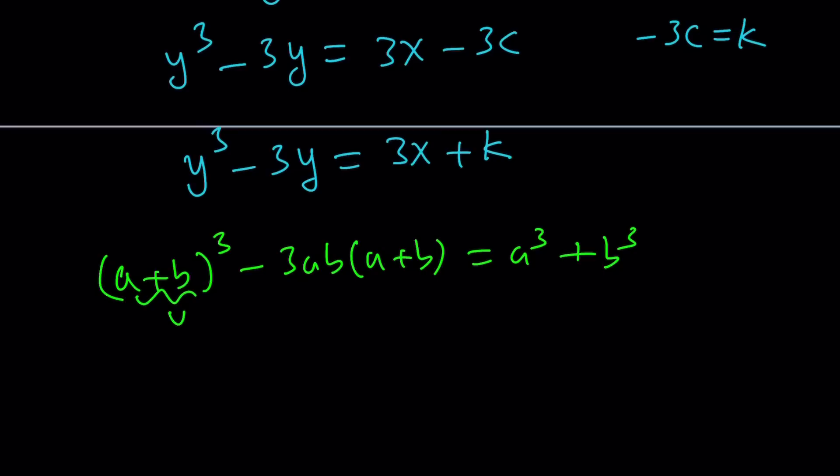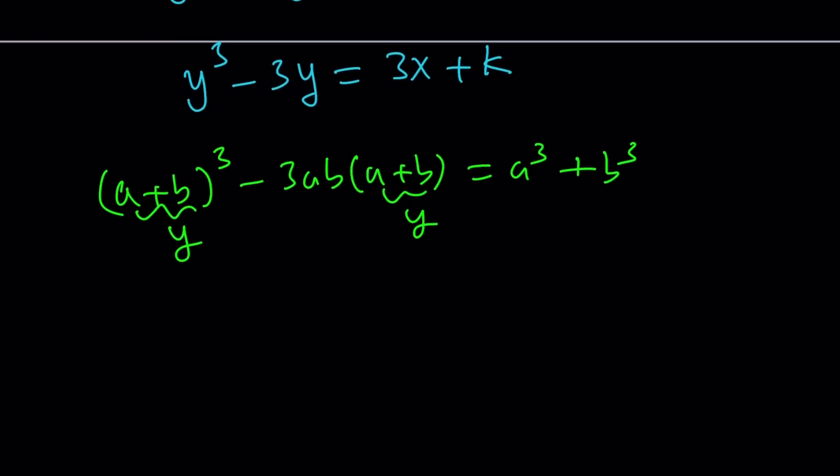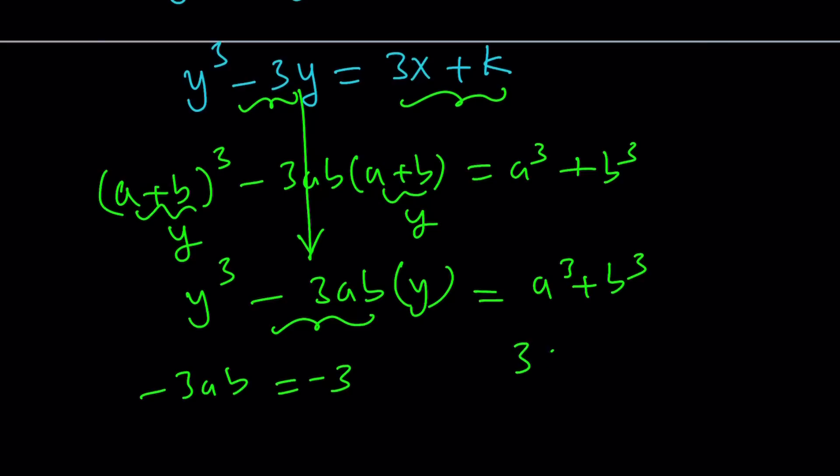So now we're going to call this y. And everything hopefully falls into place because we now get y cubed minus 3ab y. It equals a cubed plus b cubed. And compare this to our equation here. You're going to notice that the coefficient of y is negative 3ab. And here it's negative 3. So, negative 3ab equals negative 3. And the constant is 3x plus k, which is equal to a cubed plus b cubed.